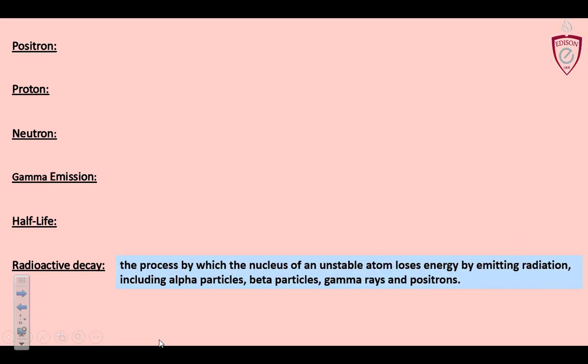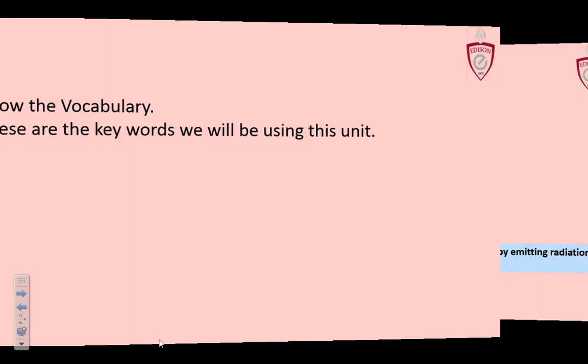Radioactive decay. This is another common term. It's just the process by which the nucleus of an unstable atom loses energy by emitting radiation. Sometimes it's a particle. Sometimes it's light. Including alpha particles, beta, gamma rays, and or positrons. Good old fashioned generic definition. It's just what radioactivity is man. That's what we're doing.